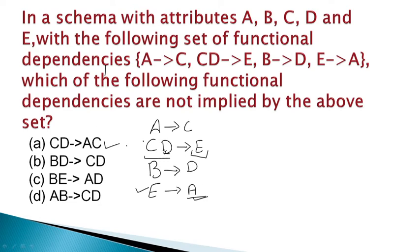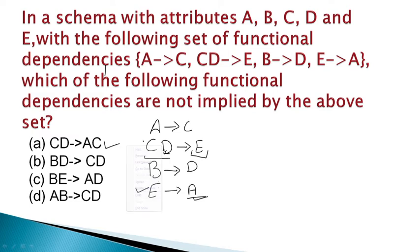Now option 2: bd → cd. From bd, d is already there, so no problem. But for c, we cannot get c from b, and we cannot get c from d either. So this functional dependency is NOT implied. This is our correct answer — bd → cd is not implied by the given set.